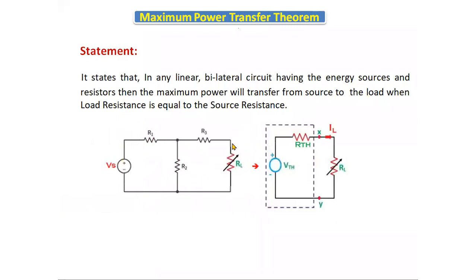We will take one sample circuit that has three resistors and one variable load resistor. The equivalent circuit of the Maximum Power Transfer Theorem consists of a Thevenin's voltage Vth connected in series with Rth, and the load resistor is the variable resistor. Maximum power transfers when RL equals Rth.